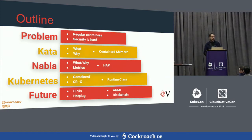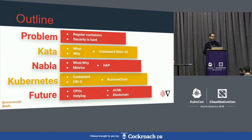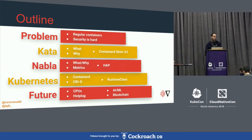Today we'll cover: why regular containers are harder to secure, a bit on Kata containers — the what's and why's — and containers in V2, which is a new feature in Kata. Then we'll talk about Nabla and its horizontal attack profile metric developed at IBM. We'll cover running these runtimes with containerd and CRI-O using the runtime class available in Kubernetes 1.12, and future workloads including AI and machine learning, and features like hot plug.